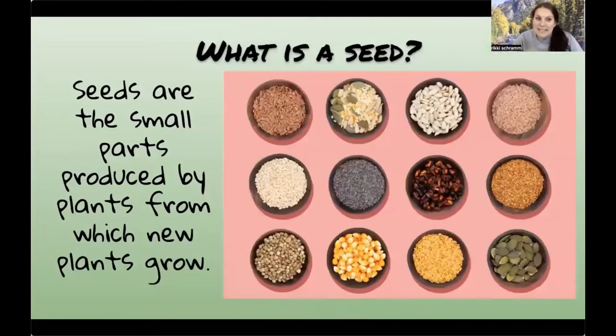Seeds are the small parts produced by plants from which new plants can grow. As a plant goes through its life cycle, it creates seeds that drop onto the soil. When rain comes, they grow into a new plant — so the next year there are more plants. I have a huge seed collection here with all different kinds of plants — flowers, vegetables, herbs, all sorts of things.